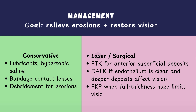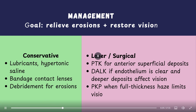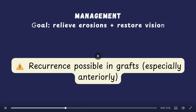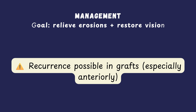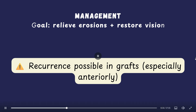For surgical options, phototherapeutic keratectomy can be used for anterior stromal deposits. If there are deeper stromal deposits affecting vision but the endothelium is healthy, a deep anterior lamellar keratoplasty can be performed. In cases with full thickness haze limiting vision, penetrating keratoplasty may be indicated. It is important to remember that recurrence is possible even after keratoplasty, especially anterior recurrence in lattice dystrophy.